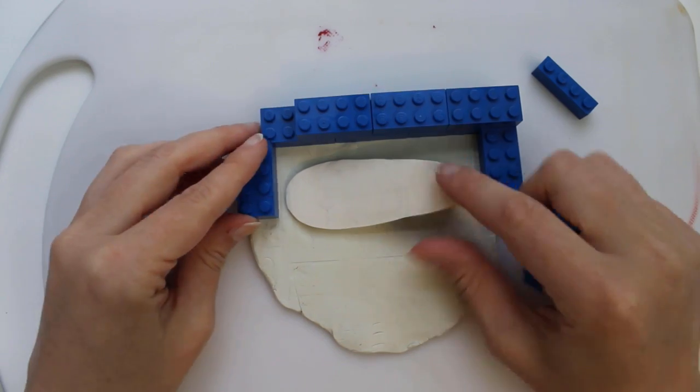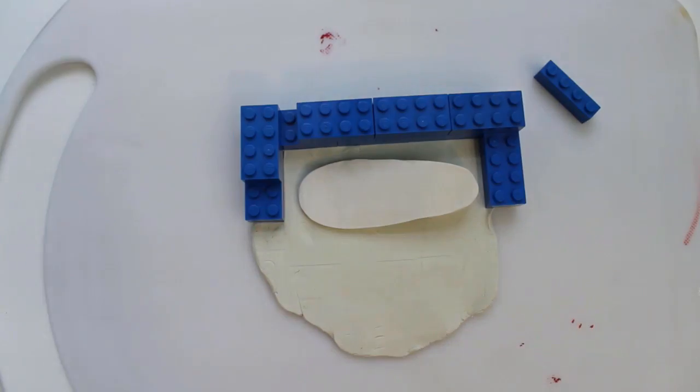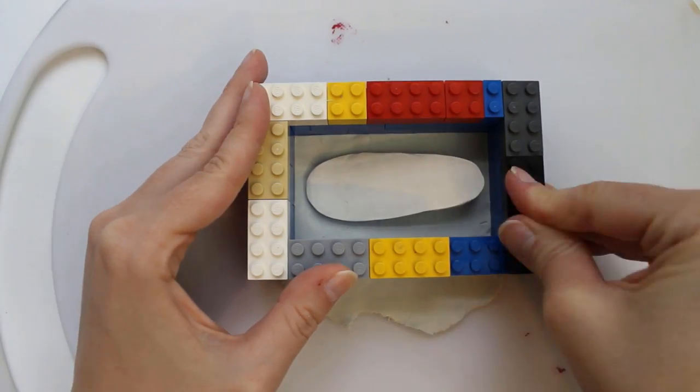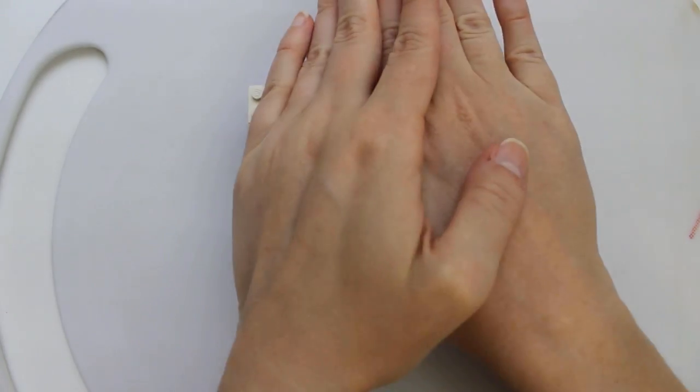To build the mold, I use my daughter's Lego bricks, which allow me to build a mold exactly the right size. She has a disproportionate number of blue bricks. I press the whole mold down firmly, then it's time to mix my silicone to create a mold.